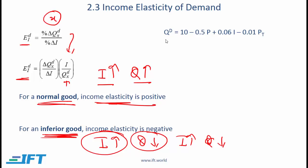In an exam context, you need to calculate income elasticity and determine whether the good is normal or inferior. Going back to the demand function for chairs: here we only consider the impact of a change in income, so assume own price and the price of tables stay the same. Notice a positive relationship — when income goes up, quantity demanded goes up — which implies chairs are a normal good.